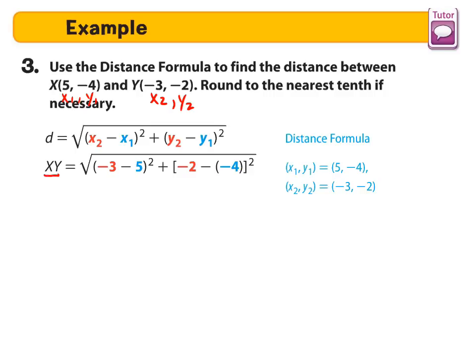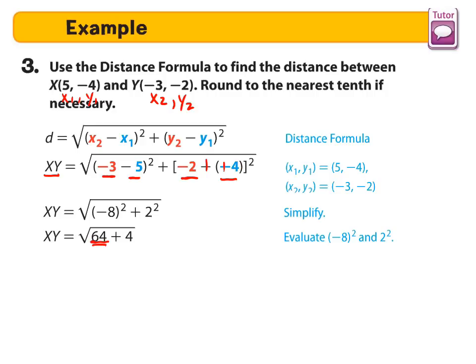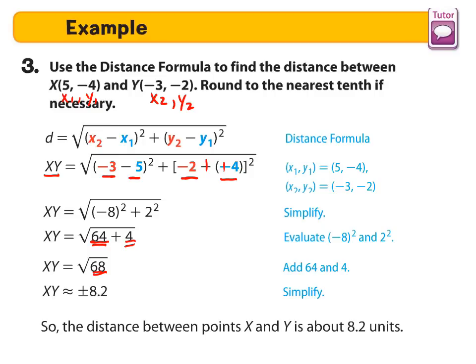So we're looking for the distance of X and Y, so we plug in -3, we plug in -5, that's going to be squared. We plug in -2, and notice we have minus -4. Don't forget to put those parentheses because that will make that positive. So we end up with -3 minus 5 is -8 squared, which is 64. -2 plus 4 is positive 2. 2 squared is 4. 64 plus 4 is 68. Square root of 68 is positive negative 8.2. So the distance between points X and Y is 8.2 units.